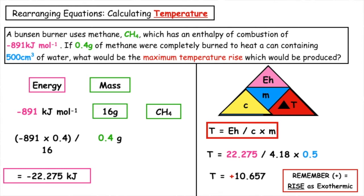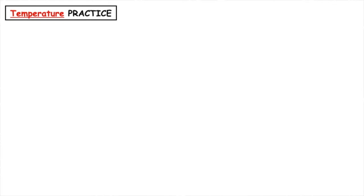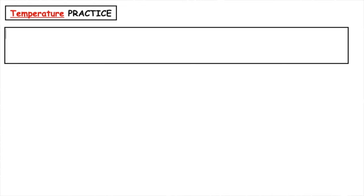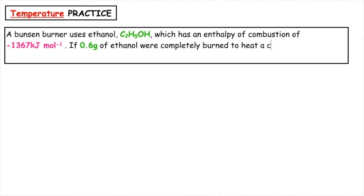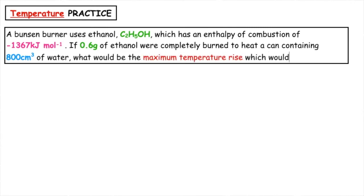Remember, it is going to always be a positive value as it's a rise, because combustion is an exothermic reaction — heat energy is given out. Now for a practice example: a Bunsen burner uses ethanol, C2H5OH, which has an enthalpy of combustion of minus 1367 kilojoules per mole. If 0.6 grams of ethanol were completely burned to heat a can containing 800 centimetres cubed of water, what would be the maximum temperature rise which would be produced?